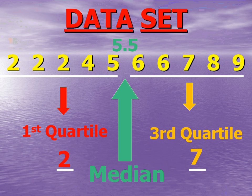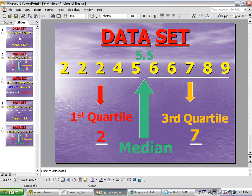When you have an odd set of data, your median is in your data set, but your first and third quartiles have to be the average of two values. When you have an even set of data, your median is not in your data set, but your first and third quartiles will be in your data set. And this is basically it with basic statistics. I hope you find this lesson both helpful and informative.